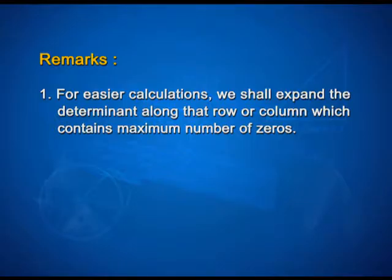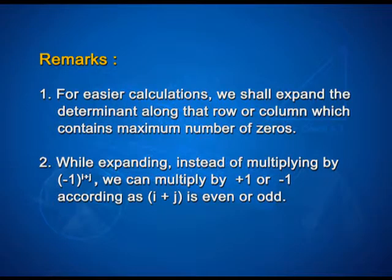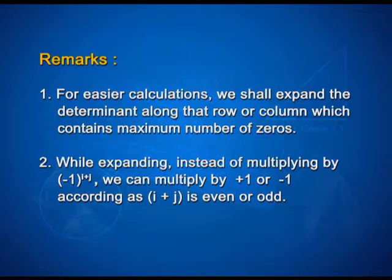Here are some important remarks. First, for easier calculations, we shall expand the determinant along the row or column which contains the maximum number of zeros. Second, while expanding, instead of multiplying by (-1)^(i+j), we can multiply by +1 or -1 according as i+j is even or odd.